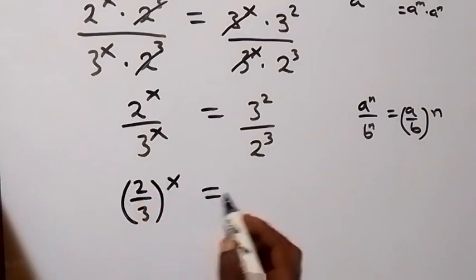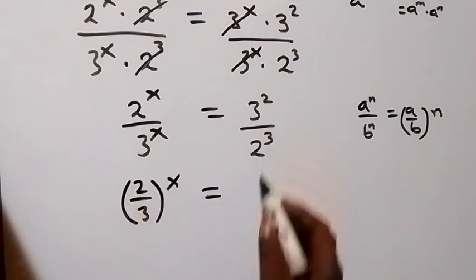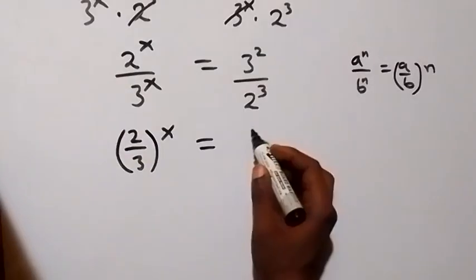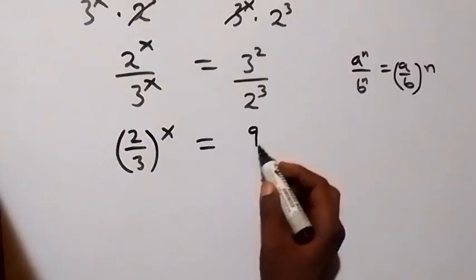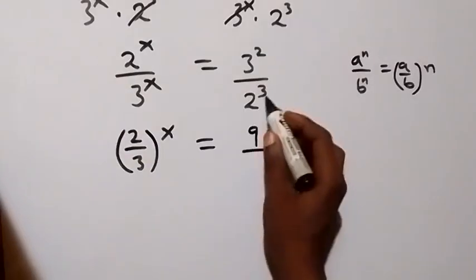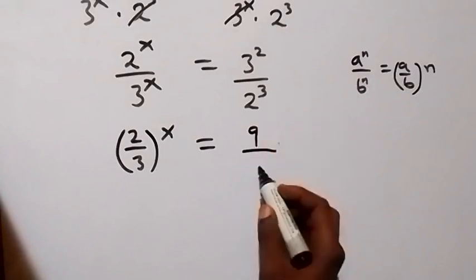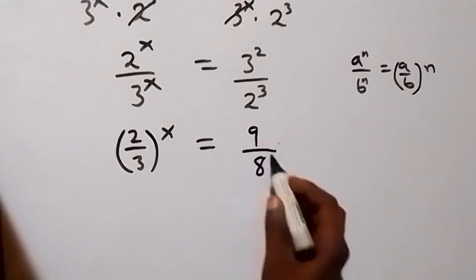And then equals to here, 3 squared over — 3 times 3 — and that's 9. And 2 raised to power 3, 2 times 2 times 2, which is 8.